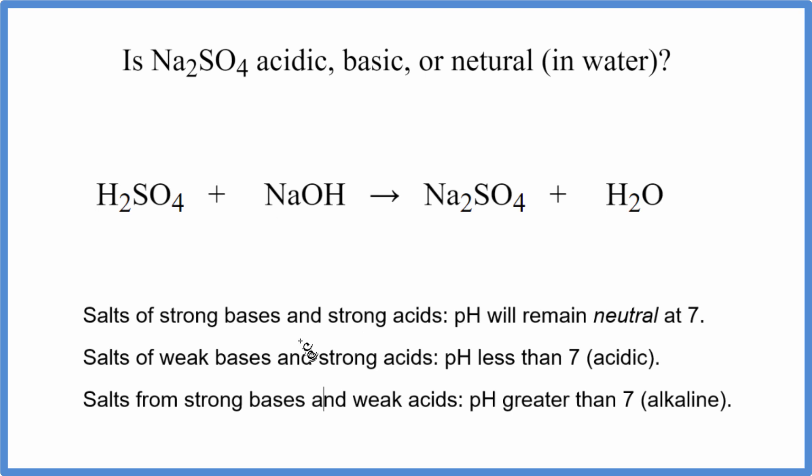And we have these rules here. If we know whether it's a strong acid or a strong base, the combination of these two, we can figure out what the pH of this substance will be. So let's take a look at this chart here.